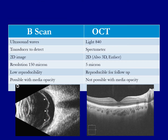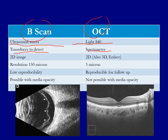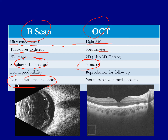Let me explain the difference between the B scan and OCT. B scan uses ultrasound waves while OCT uses light waves. In the B scan, a transducer detects the lesion, while in OCT a spectrometer detects the lesion. Resolution is important: the B scan resolution is 150 microns while OCT is 5 microns. B scan is possible through opaque media, while for OCT you need clear media — if you cannot see the retina, the machine cannot see the retina either.